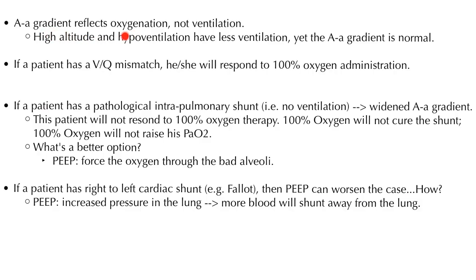The AA gradient reflects oxygenation, not ventilation. High altitude and hypoventilation are causes of decreased ventilation, but the AA gradient is normal because oxygenation is okay. If a patient has VQ mismatch, they will probably respond to 100% oxygen. But if a patient has a pathological intrapulmonary shunt — i.e., no ventilation — with a wide AA gradient, this patient will not respond to 100% oxygen therapy. 100% oxygen will not cure the shunt and will not raise P(a)O2.